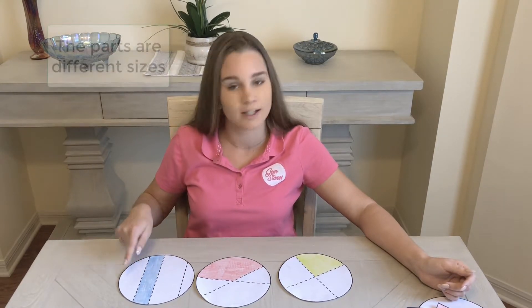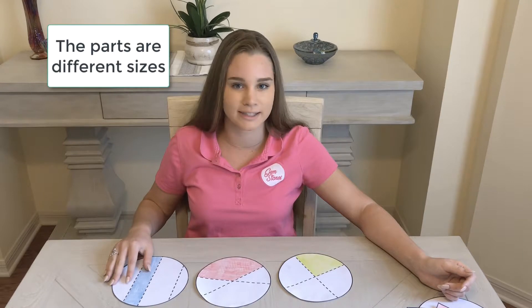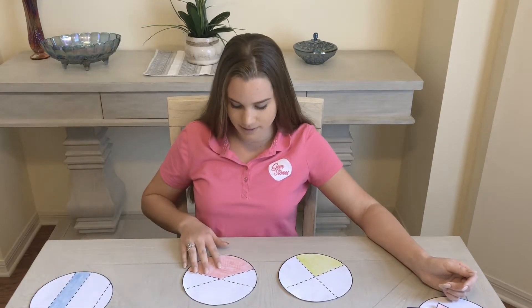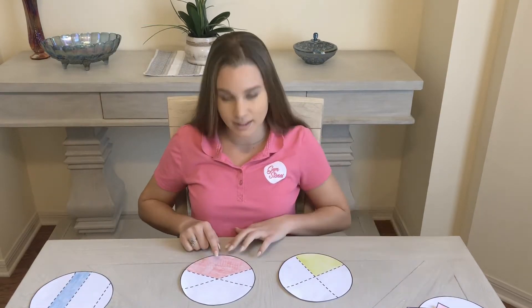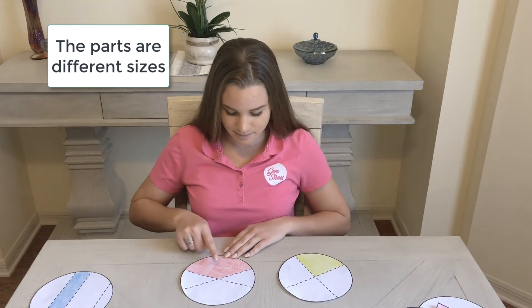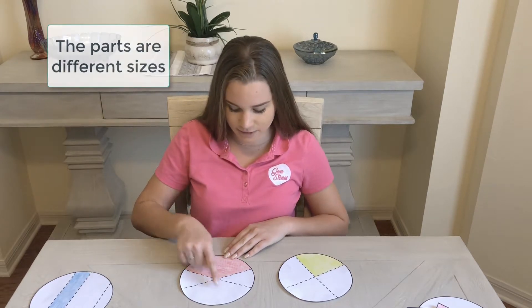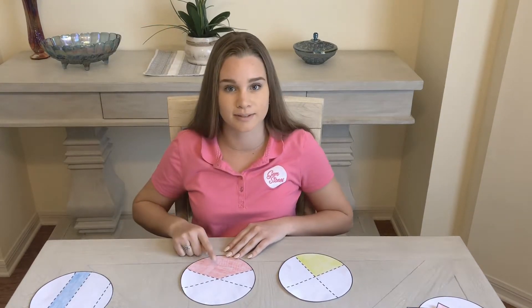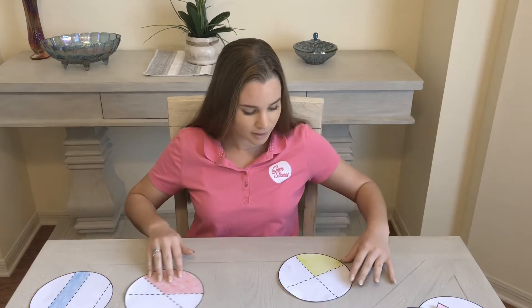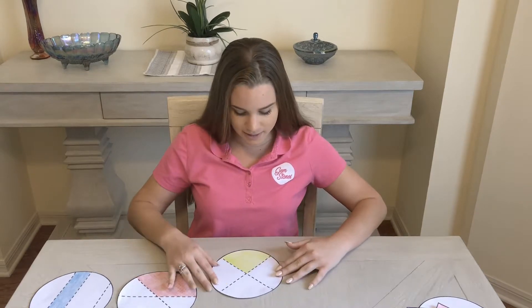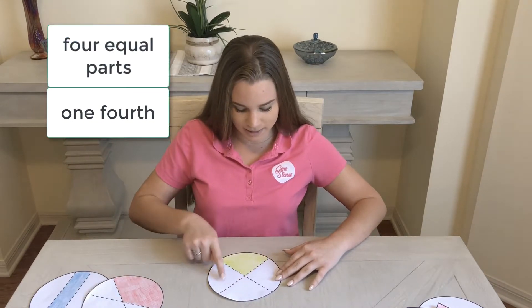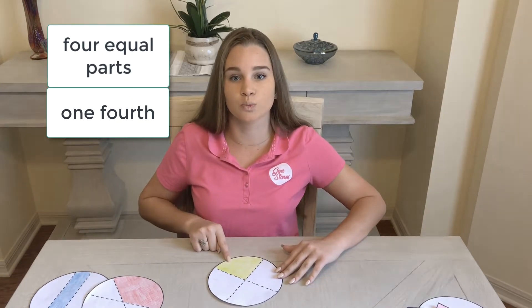There are four parts but they're not the same size. What about this one? There are four parts again but they're different sizes. This one's much smaller than this one. Is it this one? Yes, they're four equal parts. So this part shows one fourth.